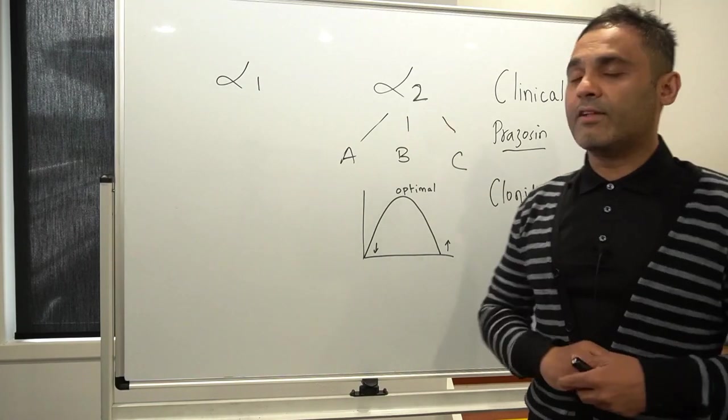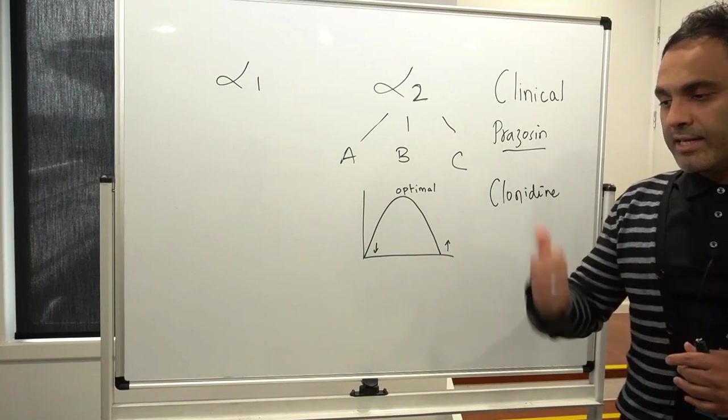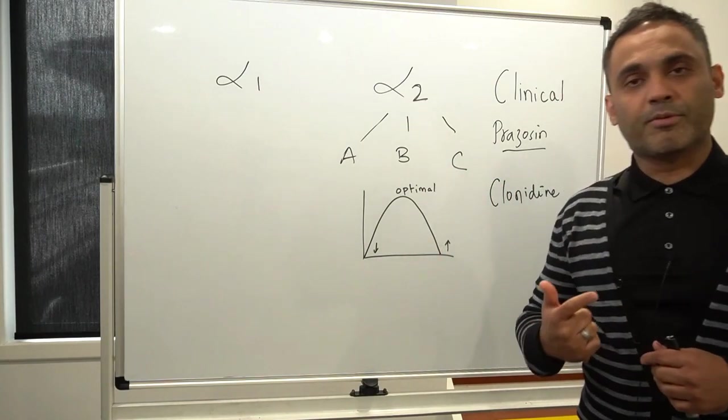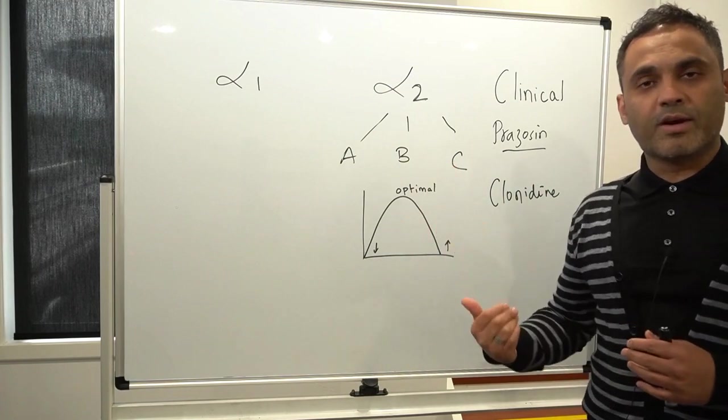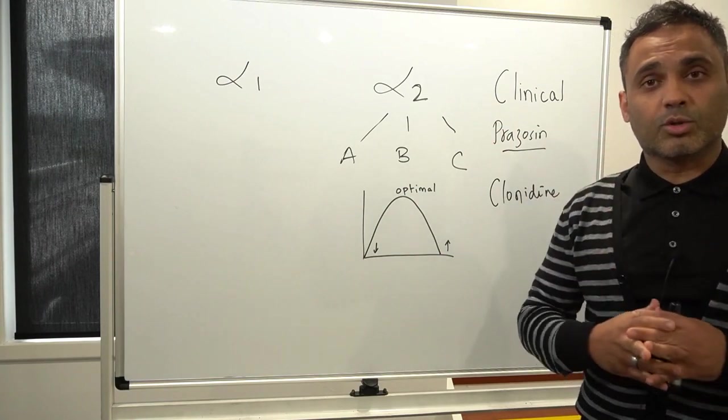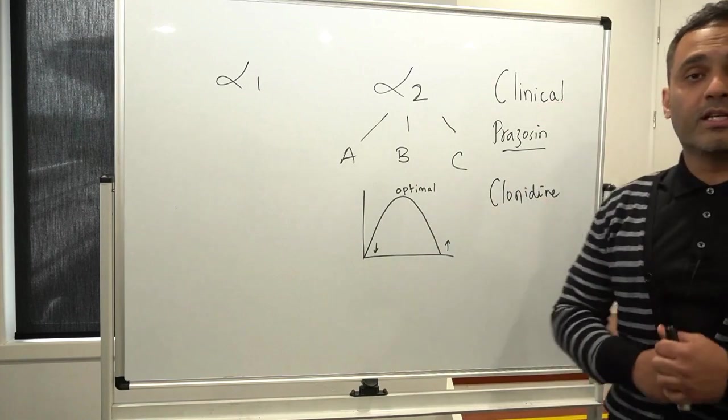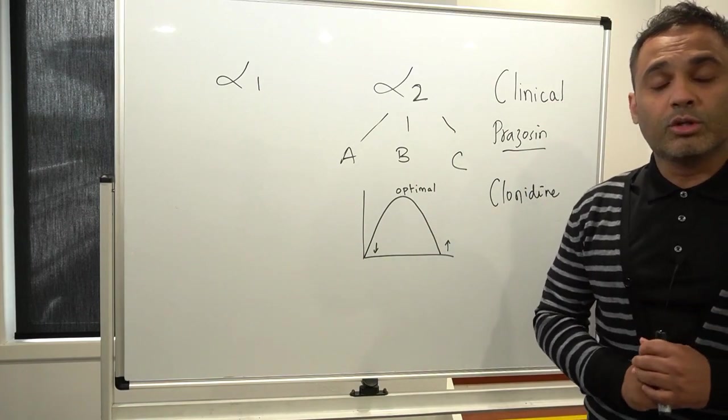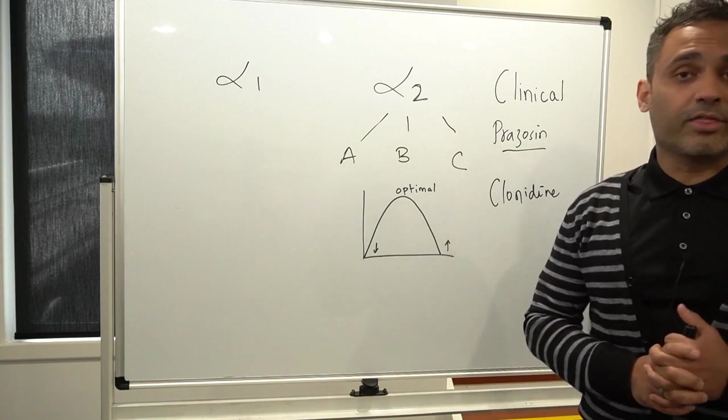When it comes to alpha-2 agonists we've got clonidine and guanfacine. Clonidine being quite versatile: anti-anxiety, anti-hyperarousal effects used in ADHD both to treat the hyperarousal at night time and improve sleep, but also to strengthen network connectivity in the prefrontal cortex through its post-synaptic activity. Also very useful in substance use withdrawal and evidence-based in the treatment of akathisia as well.